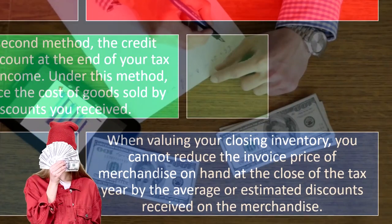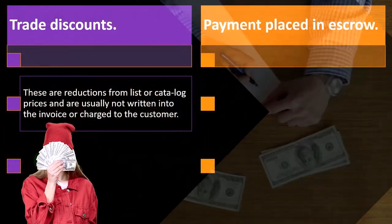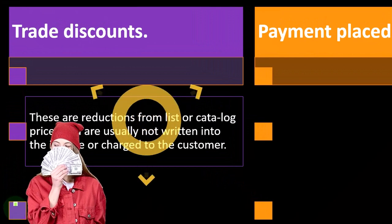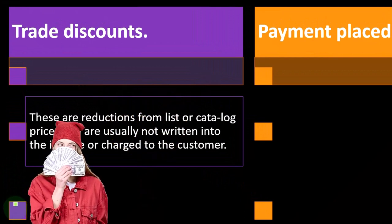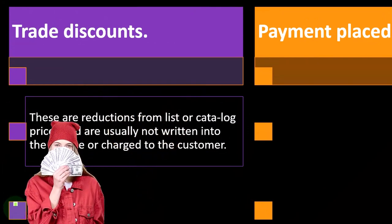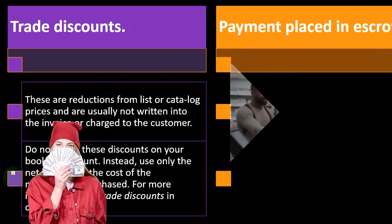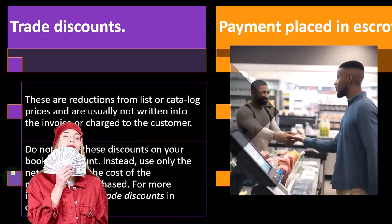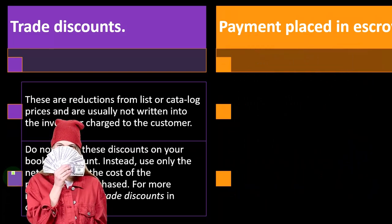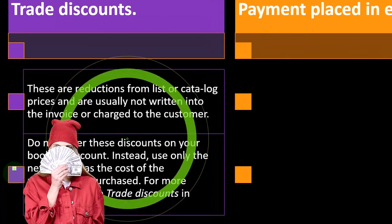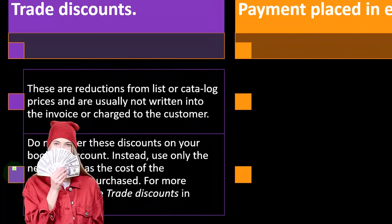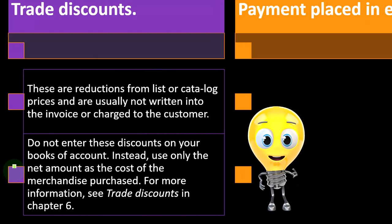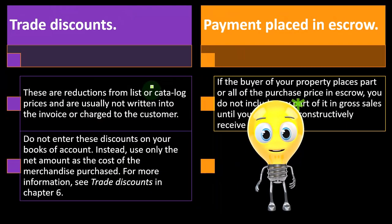Trade discounts are reductions from list or catalog prices and are usually not written into the invoice or charged to the customer. Do not enter these discounts on your books of account. Instead, use only the net amount as the cost of the merchandise purchased. For more information, see trade discounts in chapter six.